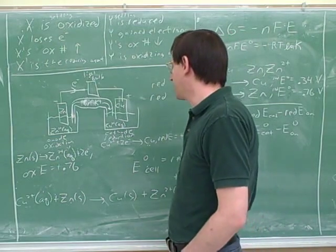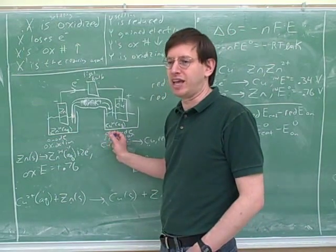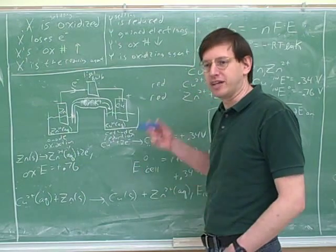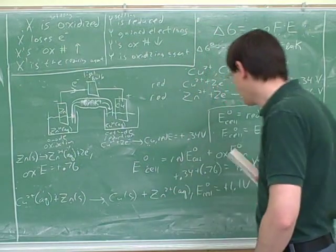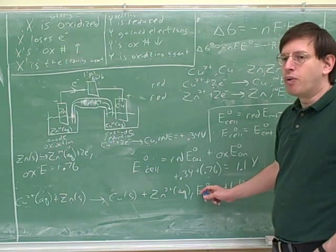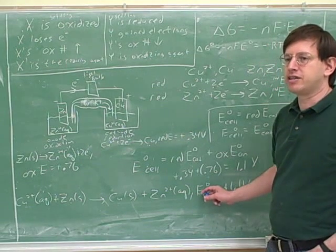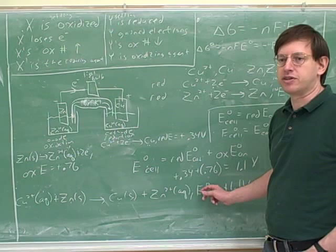If this had come out negative, we would have known that we guessed wrong about who's at the cathode and who's at the anode, that we'd accidentally set up an electrolytic cell instead of a galvanic cell. All right, now what can you do with this? Well, for example, now how could we figure out, say, what the delta G is for this reaction?